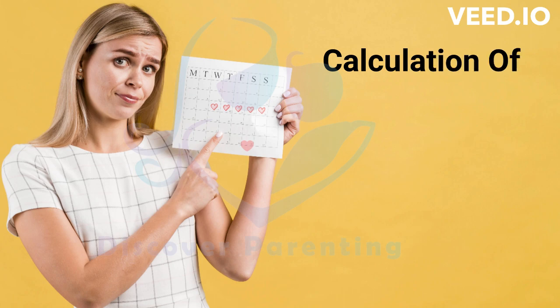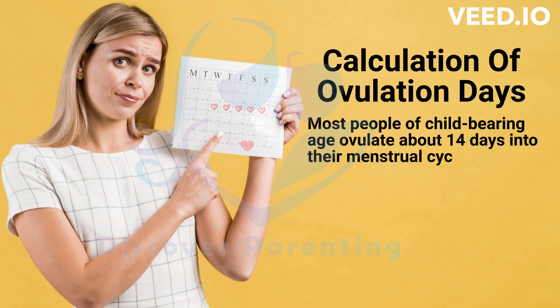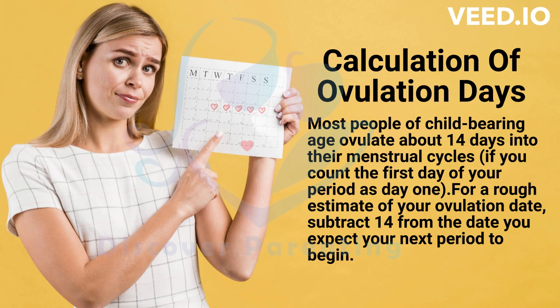Calculation of ovulation days: Most people of childbearing age ovulate about 14 days into their menstrual cycles. If you count the first day of your period as day 1, for a rough estimate of your ovulation date, subtract 14 from the date you expect your next period to begin.